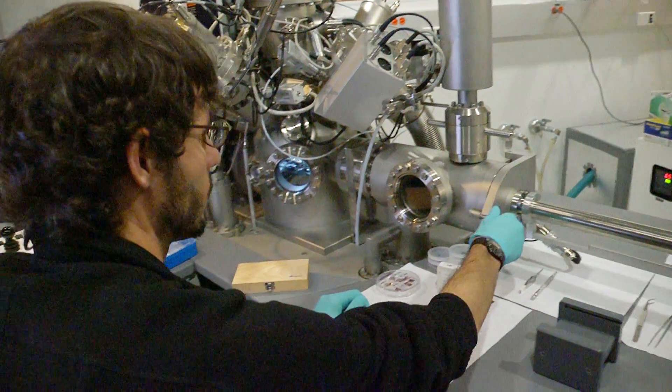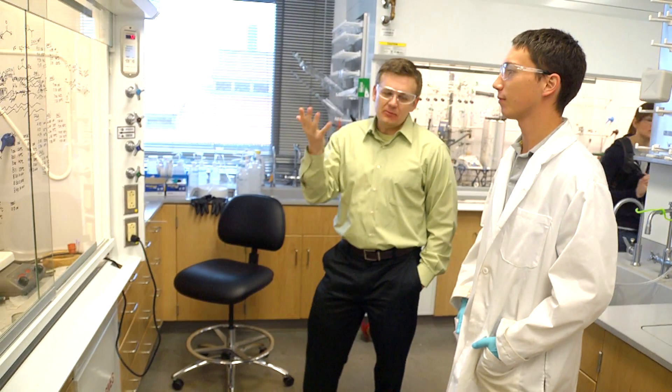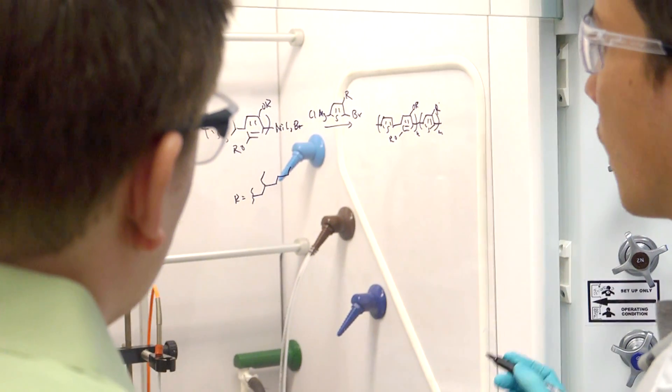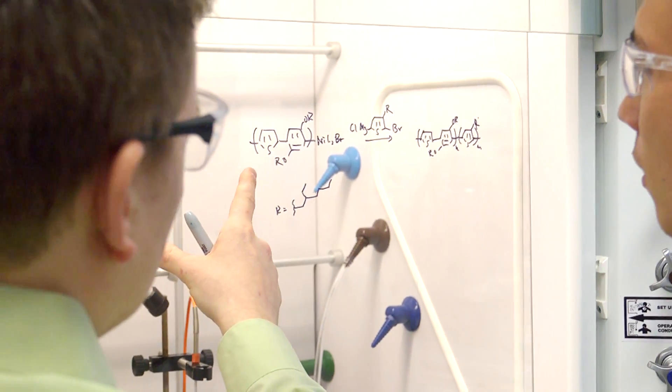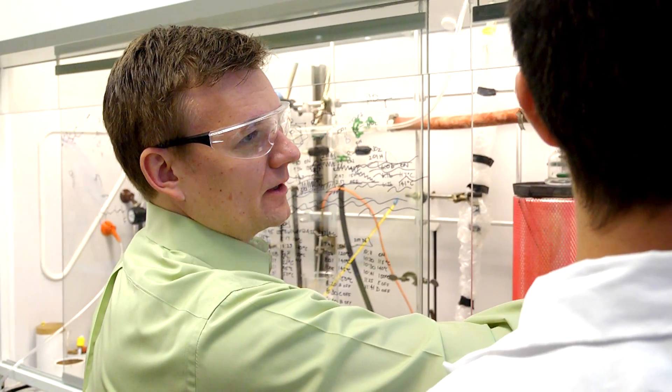We make the materials. We identify a particular problem that we're interested in from an engineering point of view. And then we take advantage of the techniques that are available over in chemistry, both theoretical and experimental. They have spectroscopic techniques.